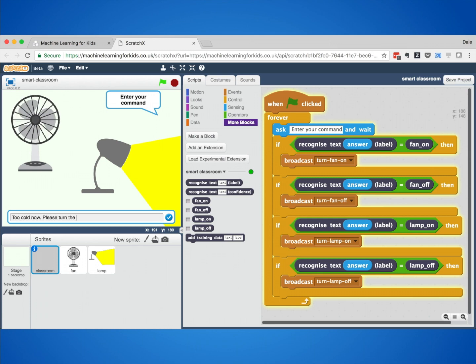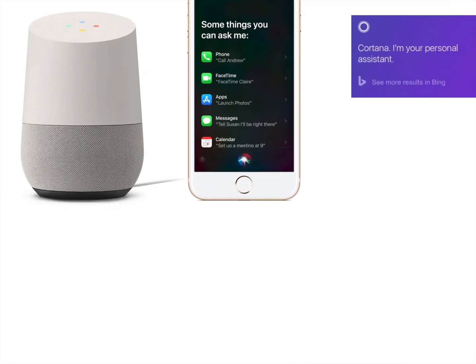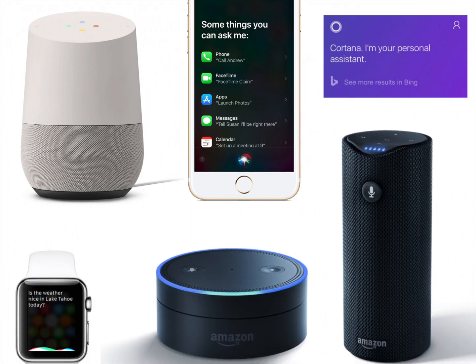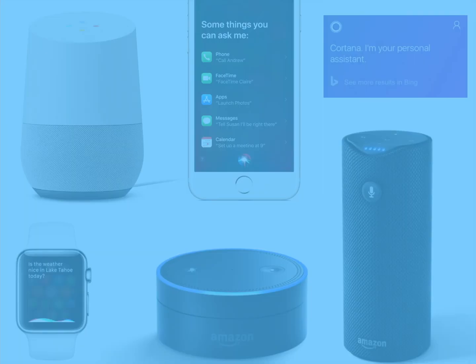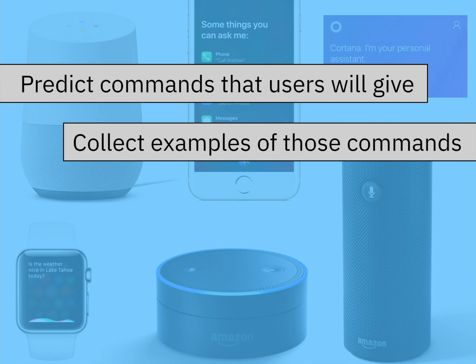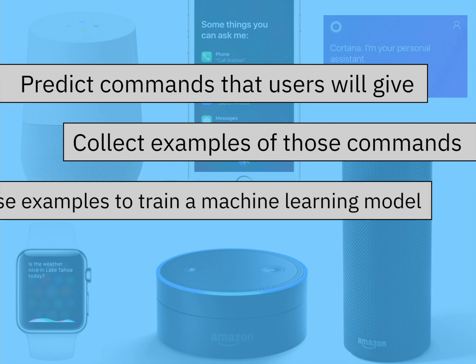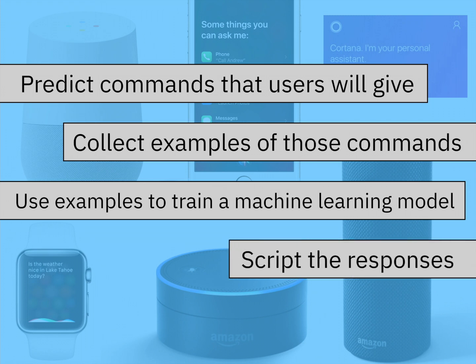What they'd made was a smart assistant. And if you've got a Google Home, a Siri, a Cortana, or an Amazon Alexa, then you've got one of these yourselves. And this is how they're made: designers predict what commands they think users will give, they collect lots of examples of how to give those commands, they use those examples to train a machine learning model, and then they script what the system should do when it recognises a command.